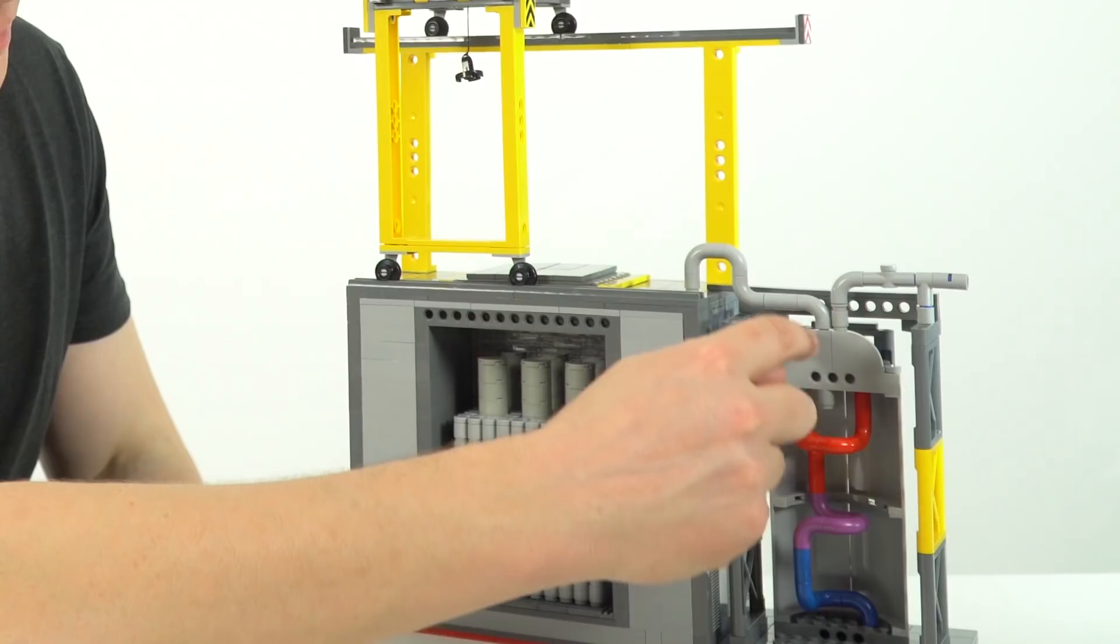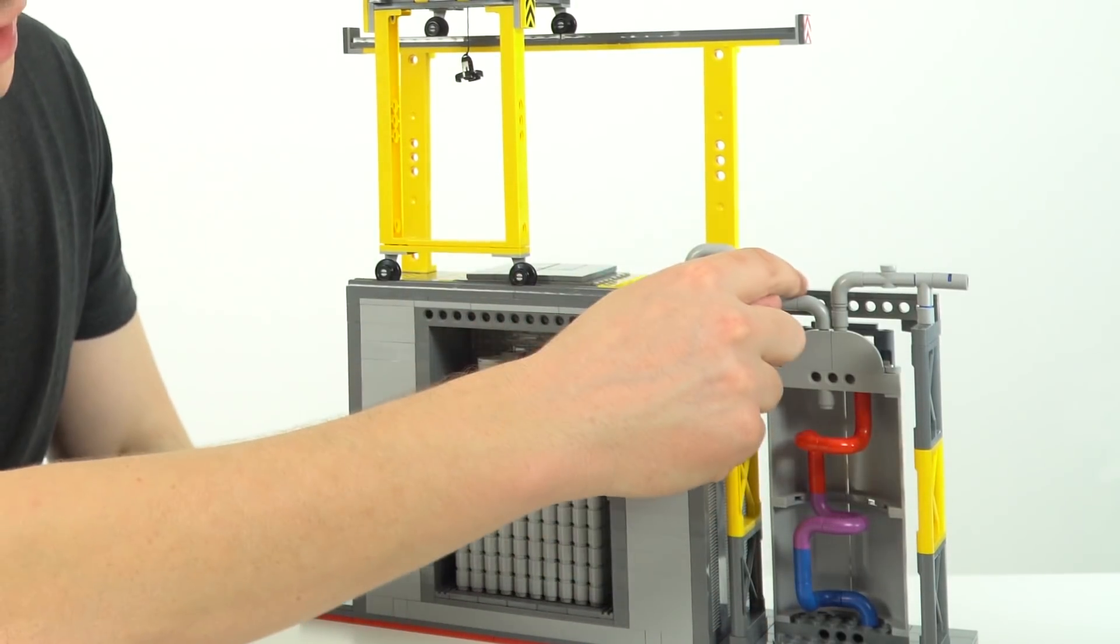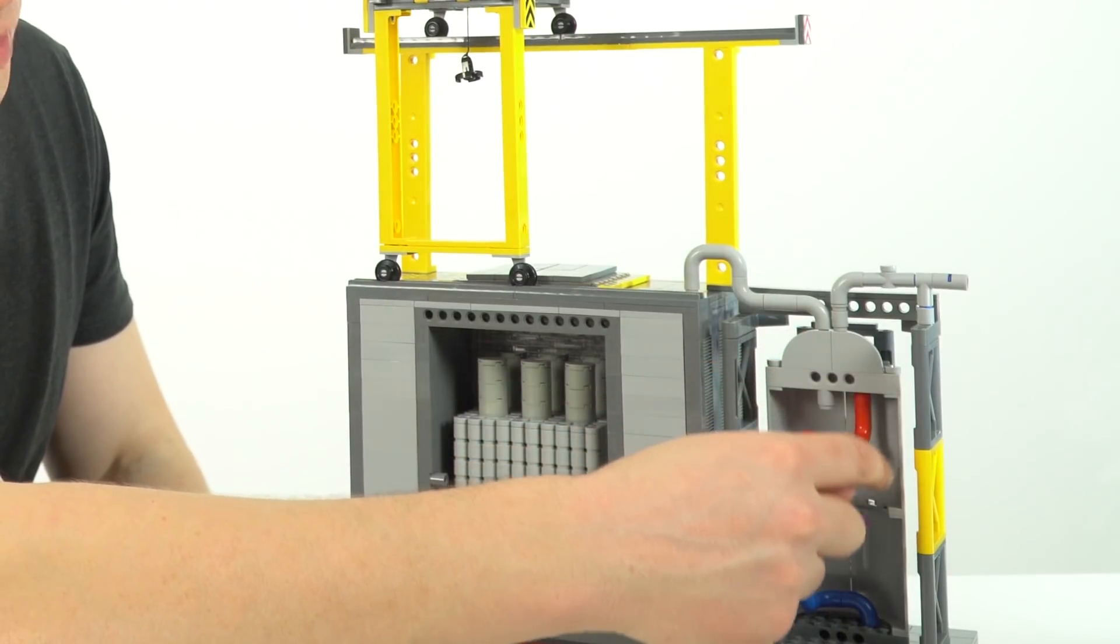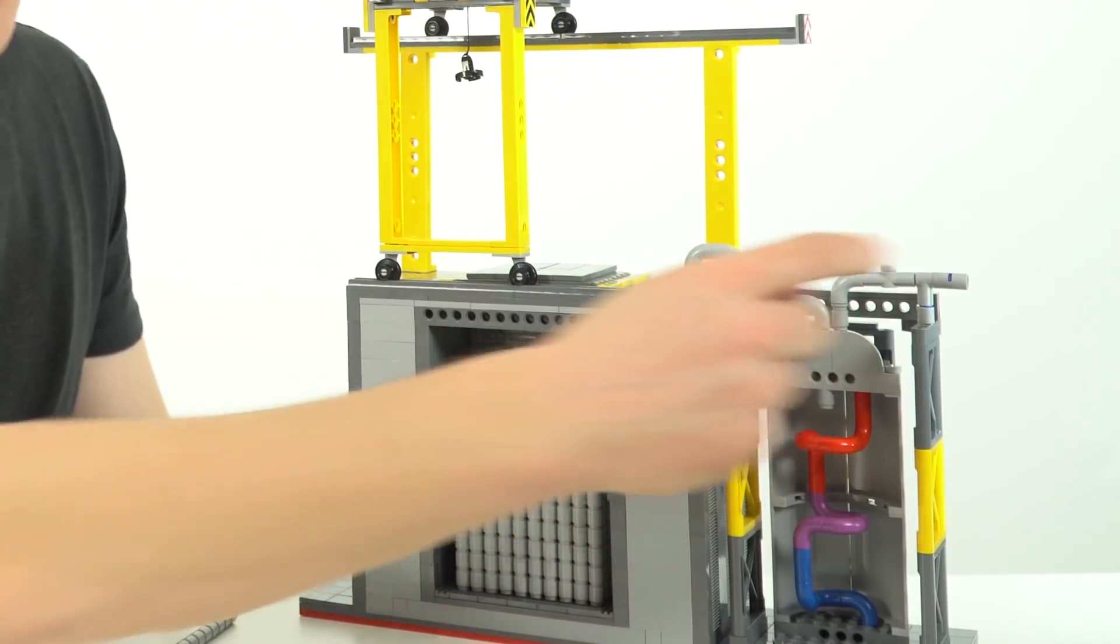What happens here is that we've got something called a heat exchanger. In the heat exchanger we basically have some of the hot water from the reactor heating up water in these other pipes which then goes off to turn the turbine.